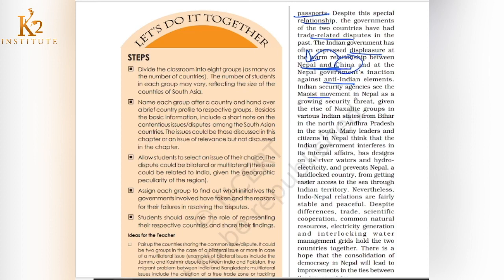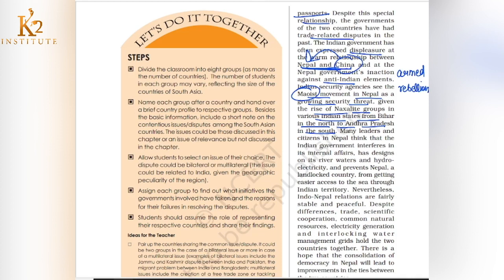Indian security agencies see the Maoist movement in Nepal as a growing security threat, given the rise of Naxalite groups in various Indian states from Bihar in the North to Andhra Pradesh in the South. Maoists are extreme groups that believe in armed rebellion to bring about changes in government. If these groups grow stronger in Nepal, they can harm the security of India as well.